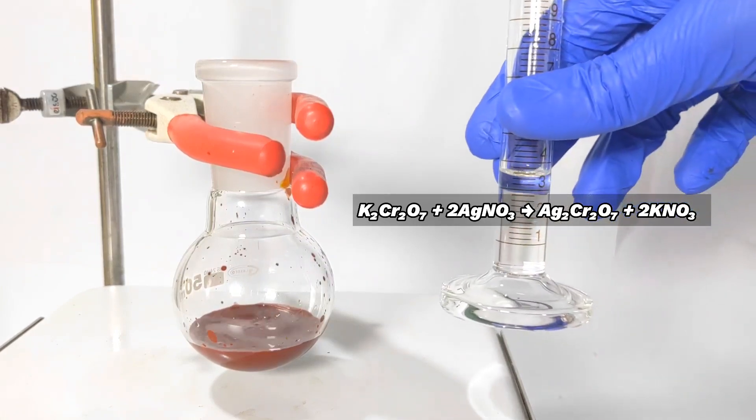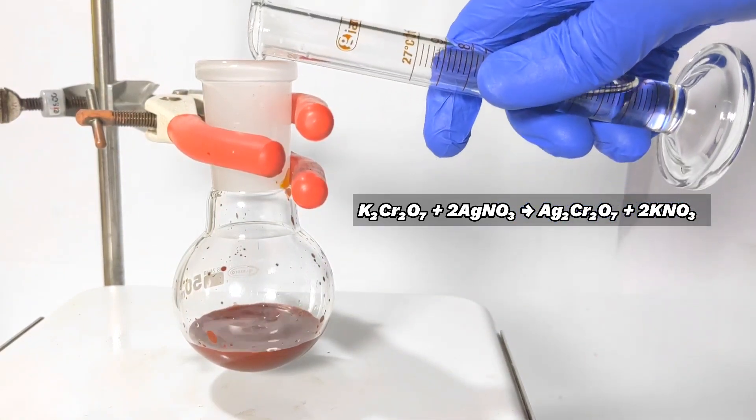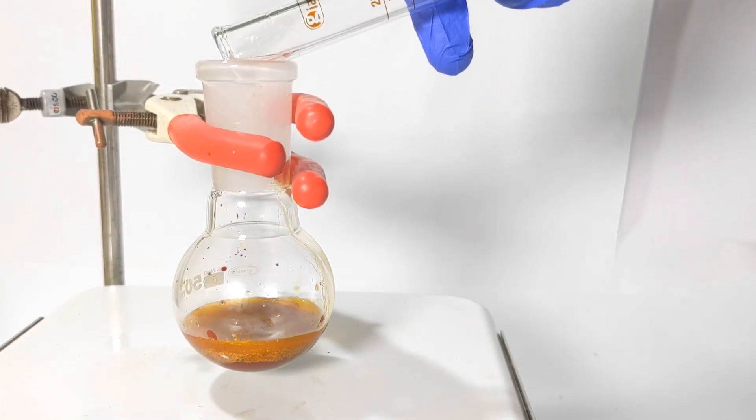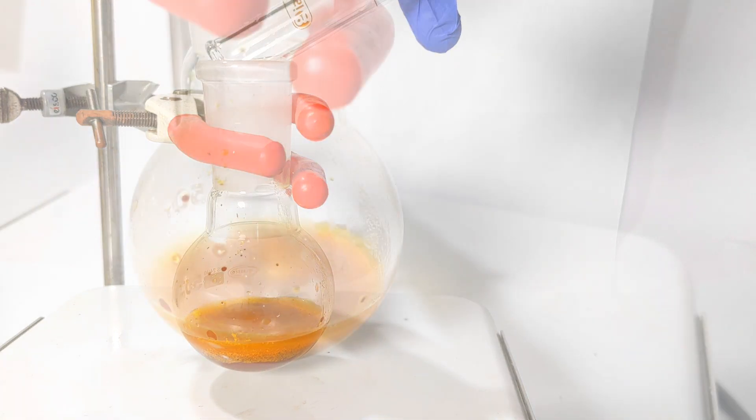Now 3 milliliters of pyridine was added and the solution was stirred for 20 minutes. You see the formation of an orange colored precipitate, and this is our desired product.